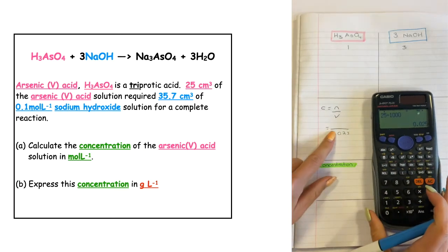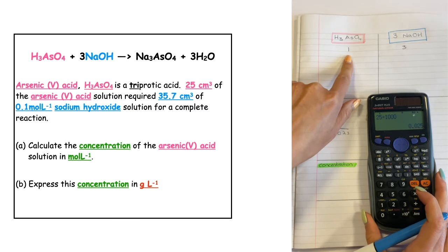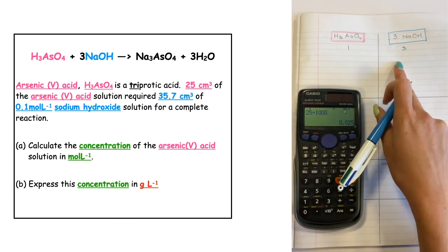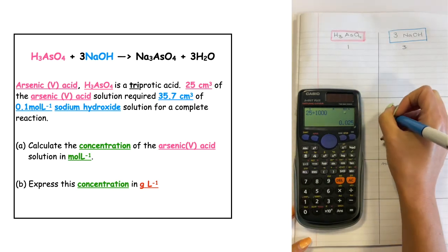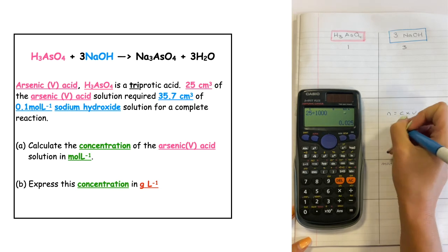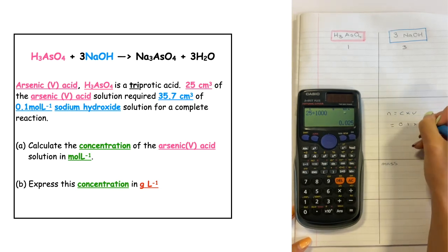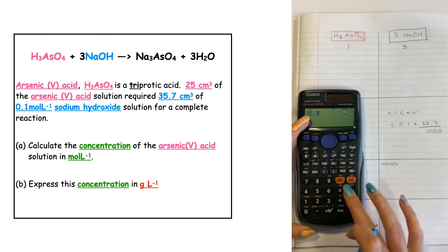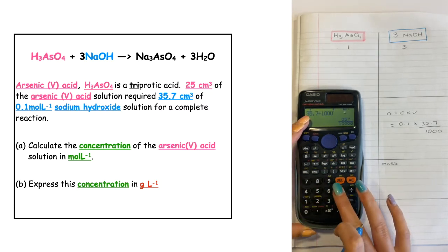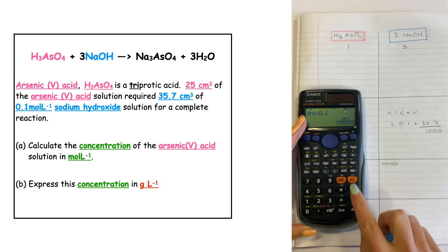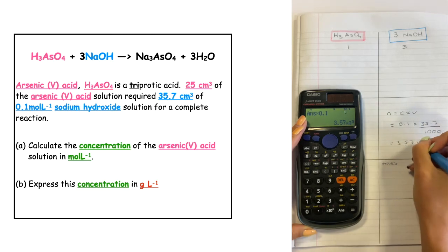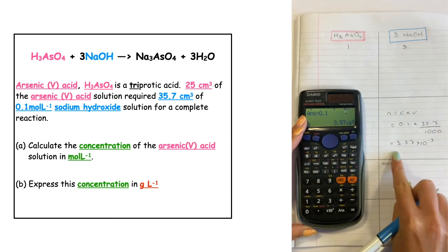To complete this, we calculate the number of moles of sodium hydroxide used in the titration. Number of moles equals C times V: the concentration 0.1, times the volume 35.7 divided by 1000 to convert to liters. So 35.7 divided by 1000 times 0.1 gives us 3.57 times 10 to the minus 3 moles — that's the number of moles that actually reacted.